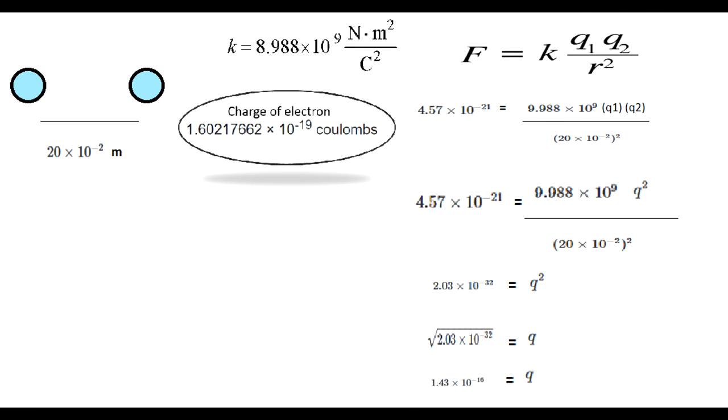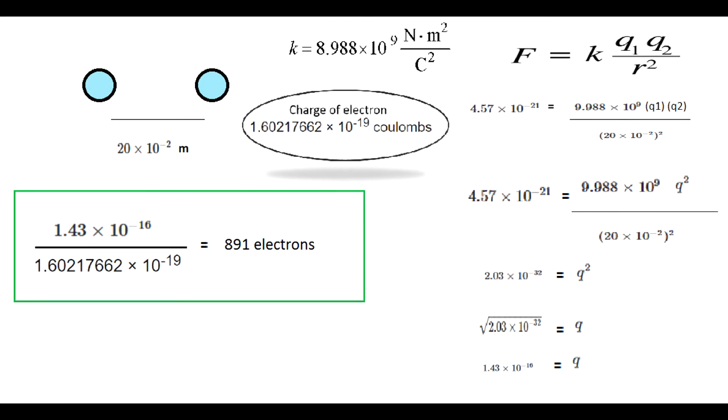Now after solving for q we have the individual charge for each sphere. It's going to be 1.43 times 10 to the negative 16 coulombs.